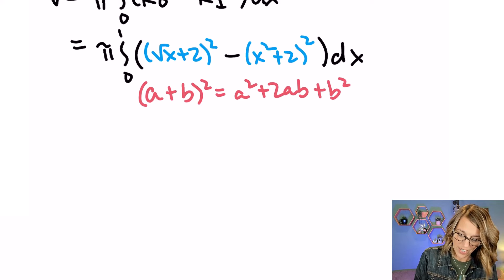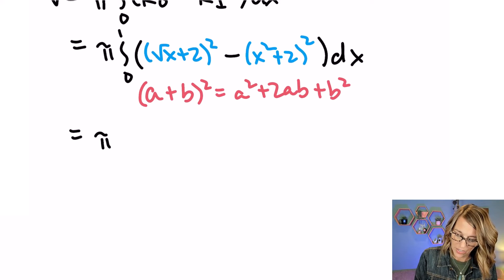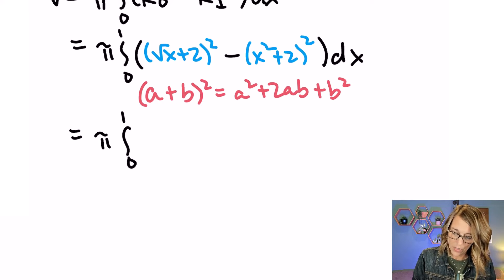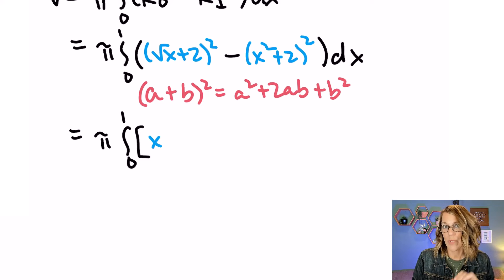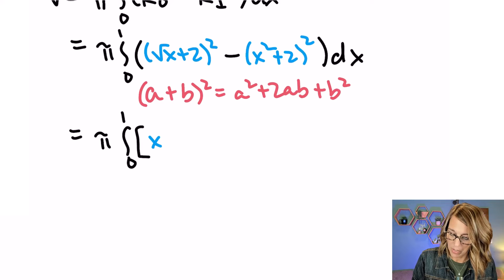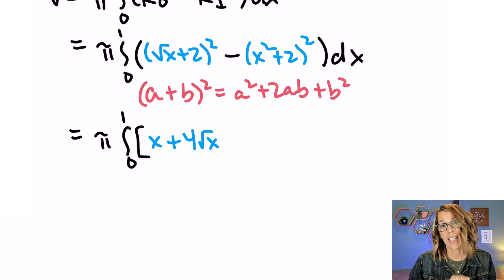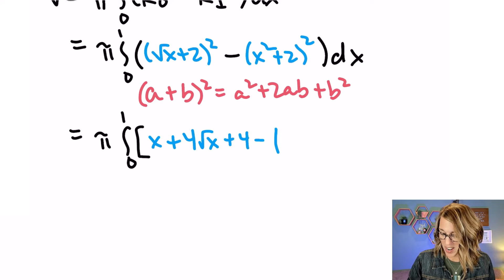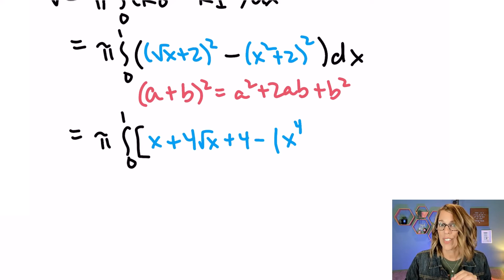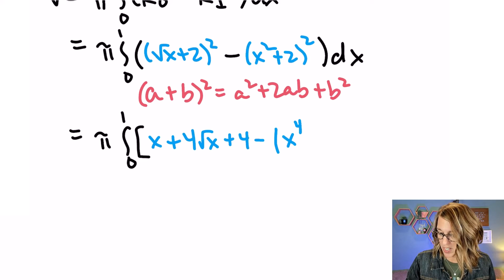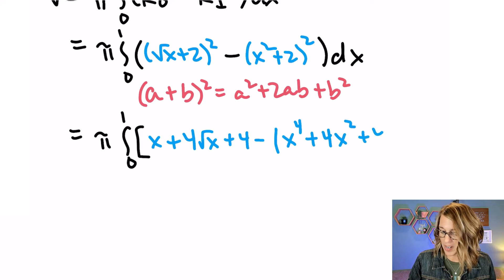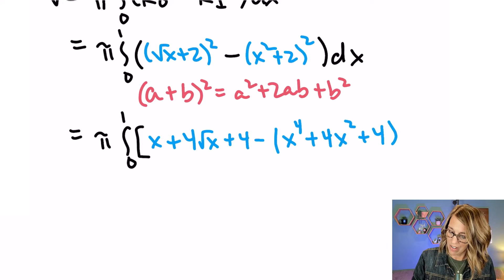Okay so we end up with pi 0 to 1. For this first quantity I'm going to do the square root of x squared which is x plus 2 times their product. 2 times 2 times radical x. So that's going to be plus 4 radical x plus the last one squared. The first one squared x squared squared is x to the fourth plus 2 times both of them. So that's going to be plus 4 times the x squared. And then the last guy squared is a 4. And this is all dx.